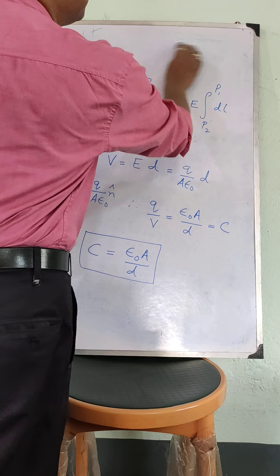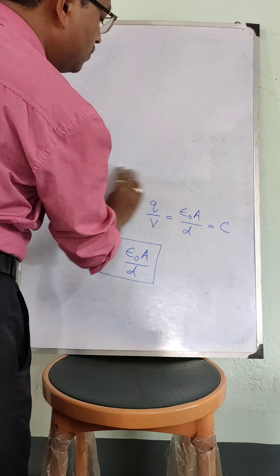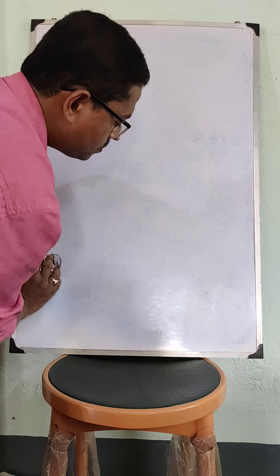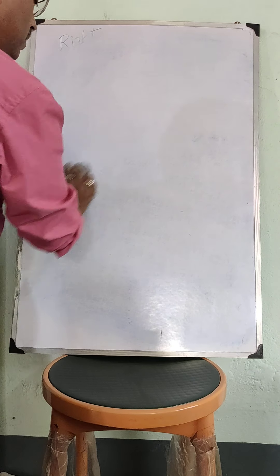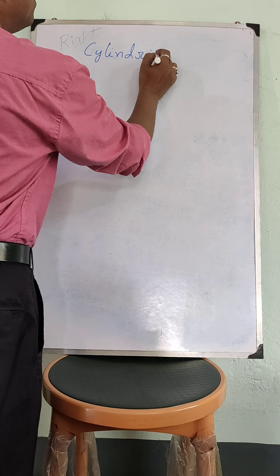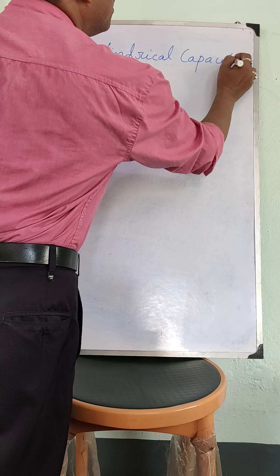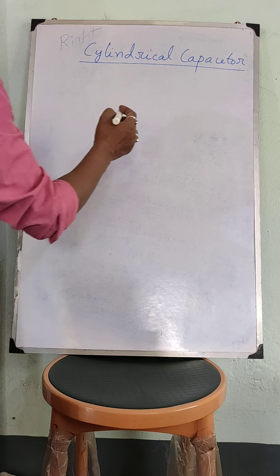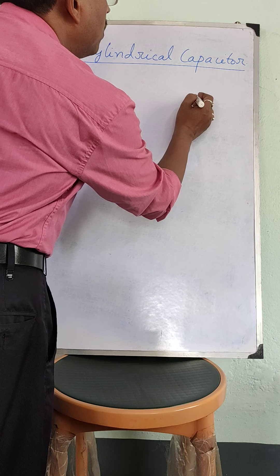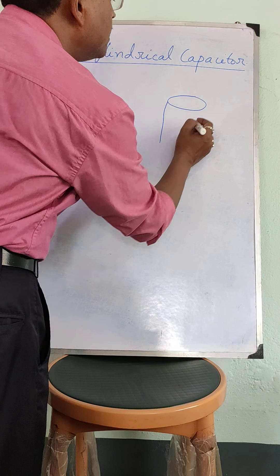Now we will do the cylindrical capacitor. A cylindrical capacitor is made up of two coaxial cylinders. We have an inner cylinder with radius A.